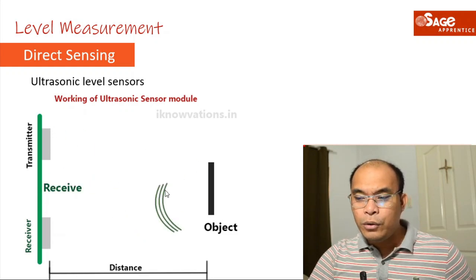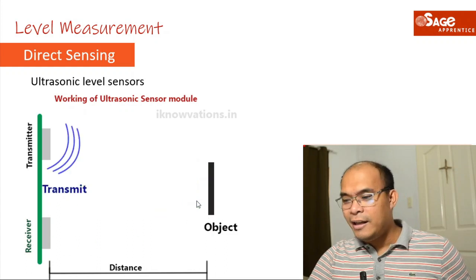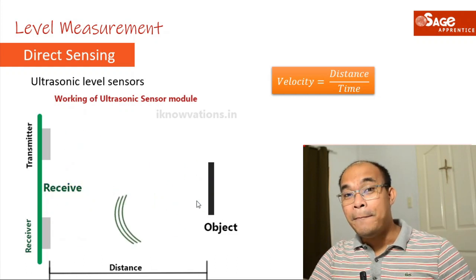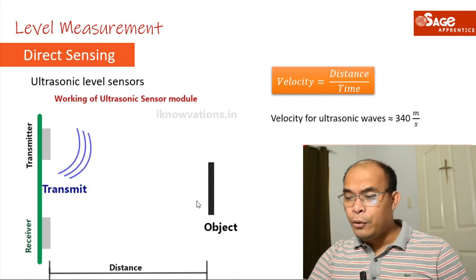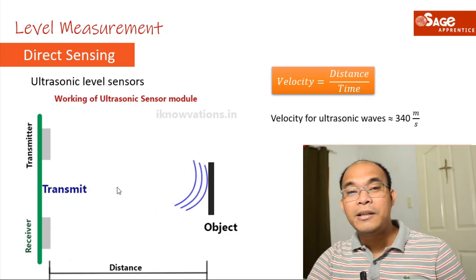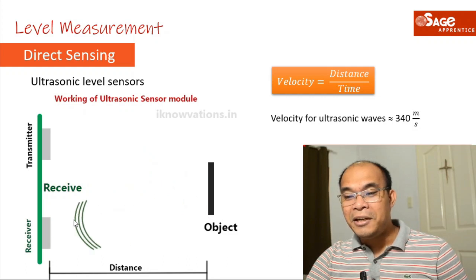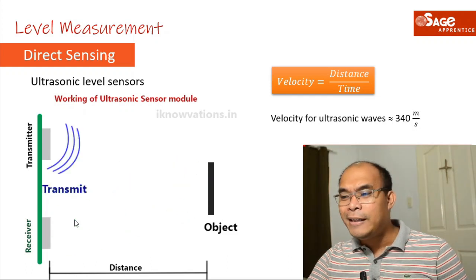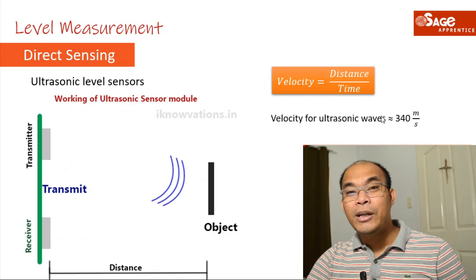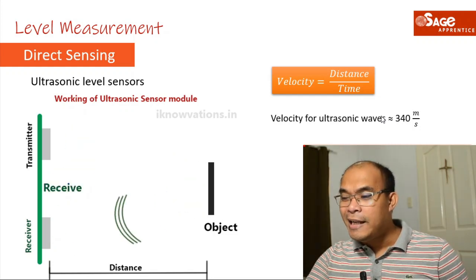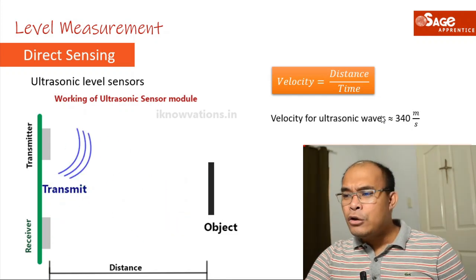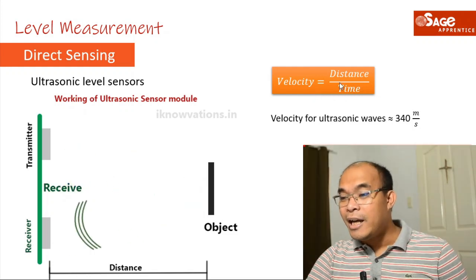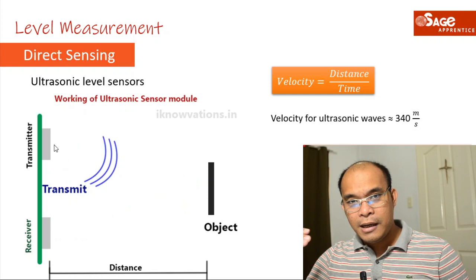To measure the level or distance from the sensor to the object, we use the physics concept: velocity equals distance over time. The velocity of ultrasonic sound waves is approximately 340 meters per second — this is a standard value that does not significantly change. Since the velocity is known, we can measure the time the signal takes to travel.